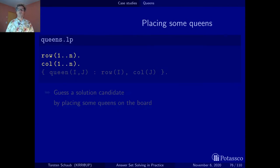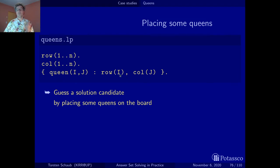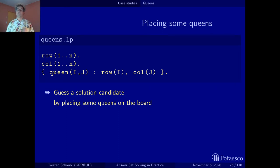Populating the board means placing queens on it, and we do this with a choice rule. As we've seen in the satisfiability testing example, we have a choice with no lower or upper bound. So we will have 25 atoms after grounding of the form queen(I,J), from queen(1,1) up to queen(5,5), and we can make an arbitrary selection among them.